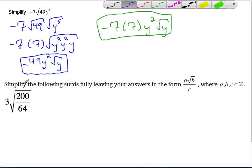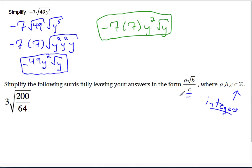In our second example, that is a little bit more complicated. You are asked to simplify the following thirds fully, leaving your answer in the form a root b over c. They like to ask the form where a, b, and c are integers. Sometimes all these symbols will throw you off a little bit, but they shouldn't.